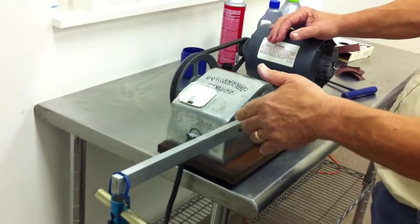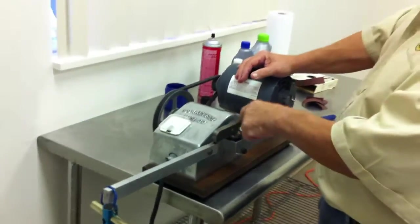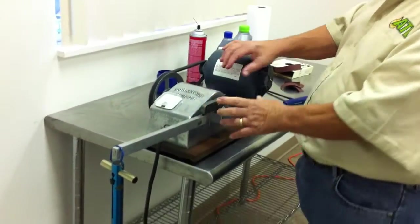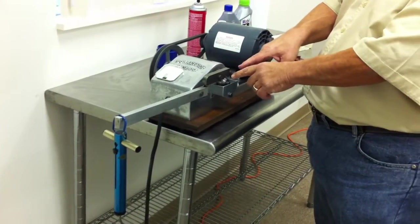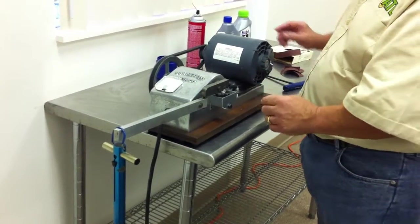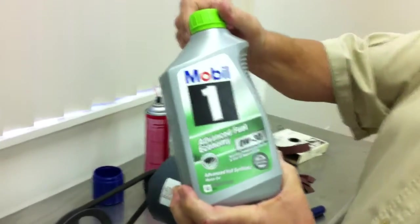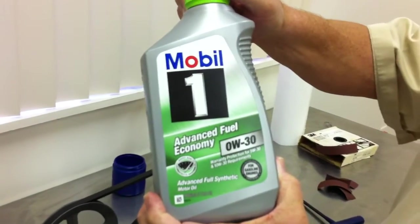Now, as we apply pressure, that pressure is resistance, and the amp meter is going to go up. And eventually, you'll have seizure. So, we're going to get started, and we're going to start off with Mobile One Synthetic, Advanced Fuel Economy Formulation.